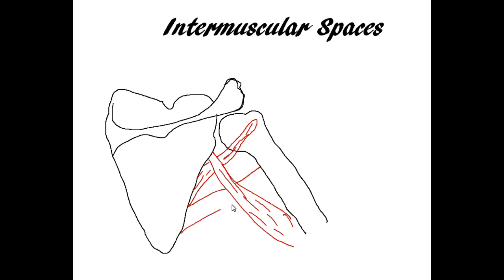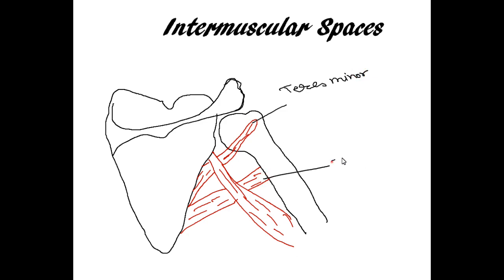Mainly three muscles are involved in the intramuscular spaces. The uppermost muscle is the teres minor muscle. One below is the teres major muscle. And the long head of the triceps will cross these two muscles.